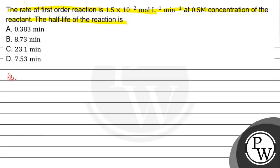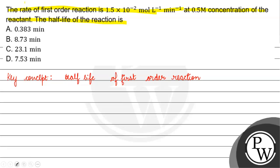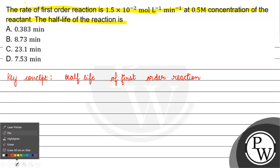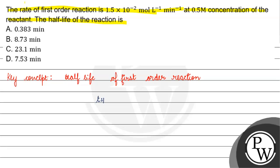The key concept for this question is the half life of a first order reaction. The half life, T½, is basically equal to 0.693 divided by K.